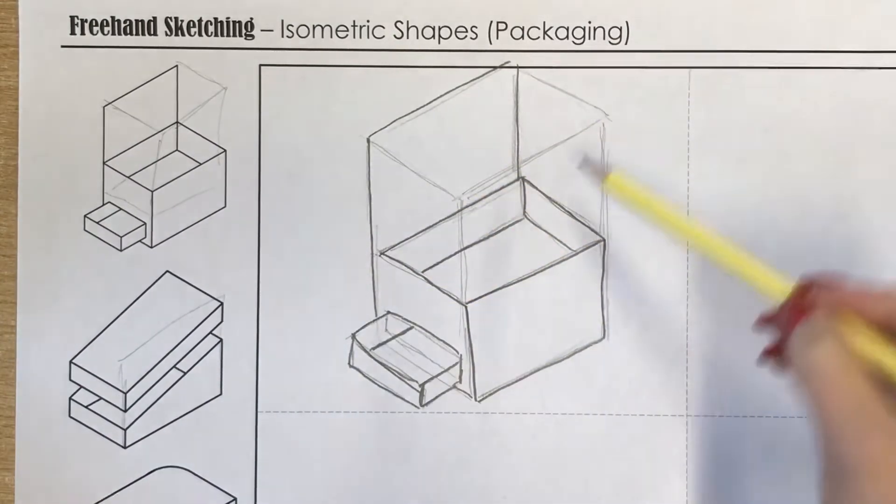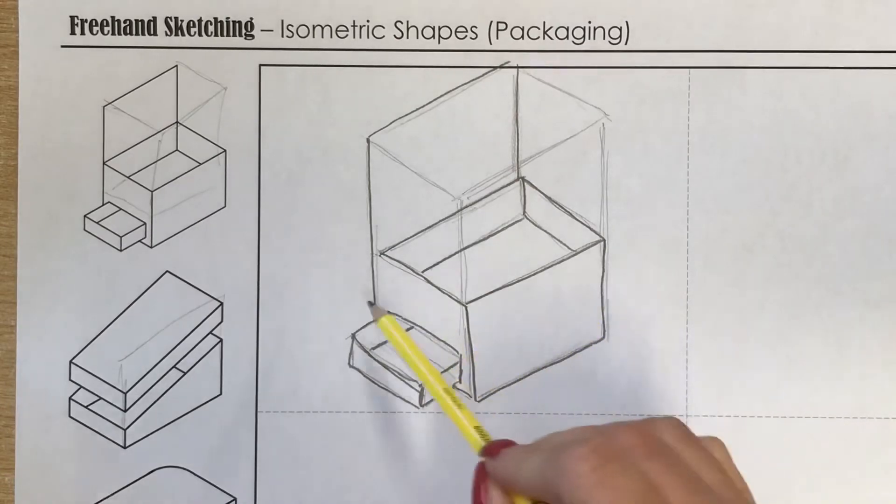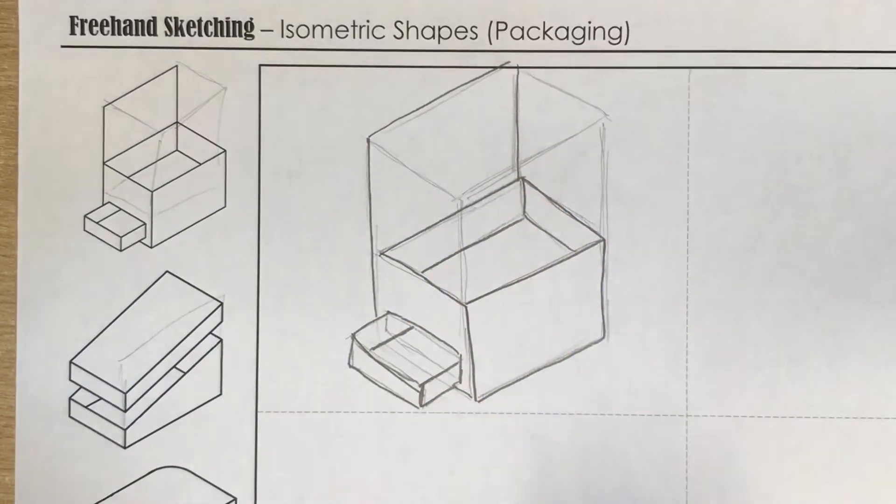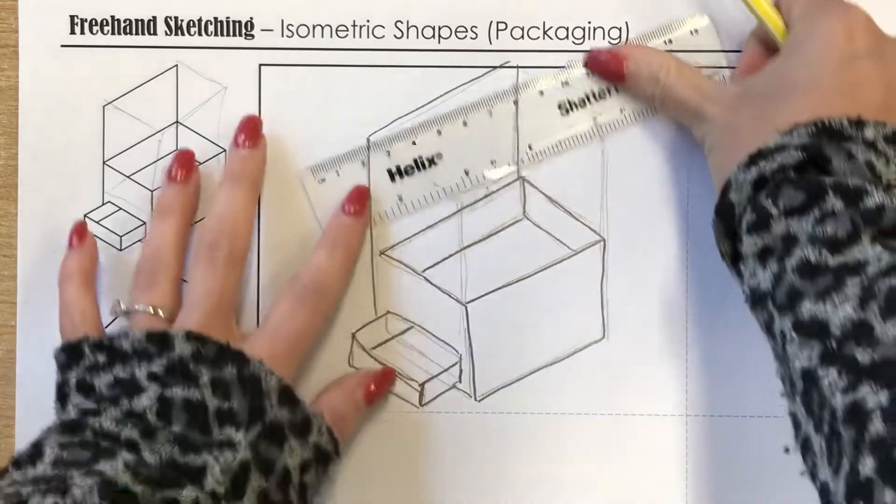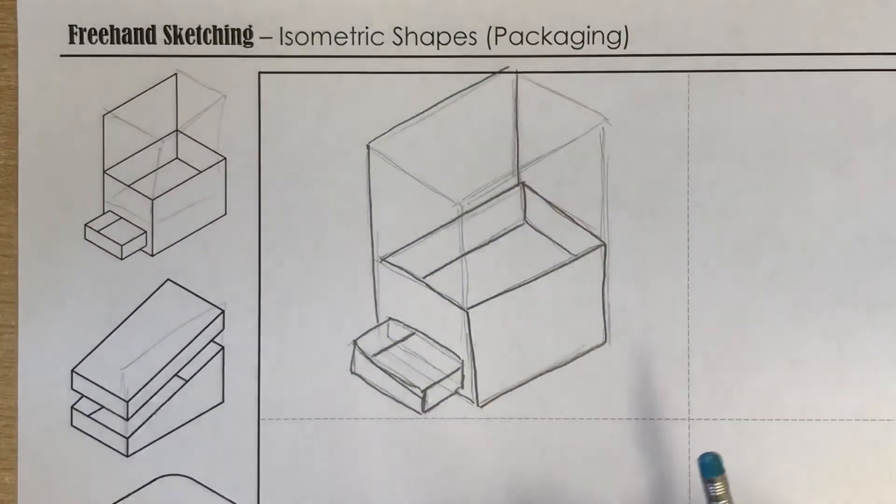All my verticals are parallel with each other. My angles are pretty much spot-on with each other. If I were to place a ruler and check these, they're not far off. So it's all about looking with your eye and working out how it's going to look to get that freehand effect.